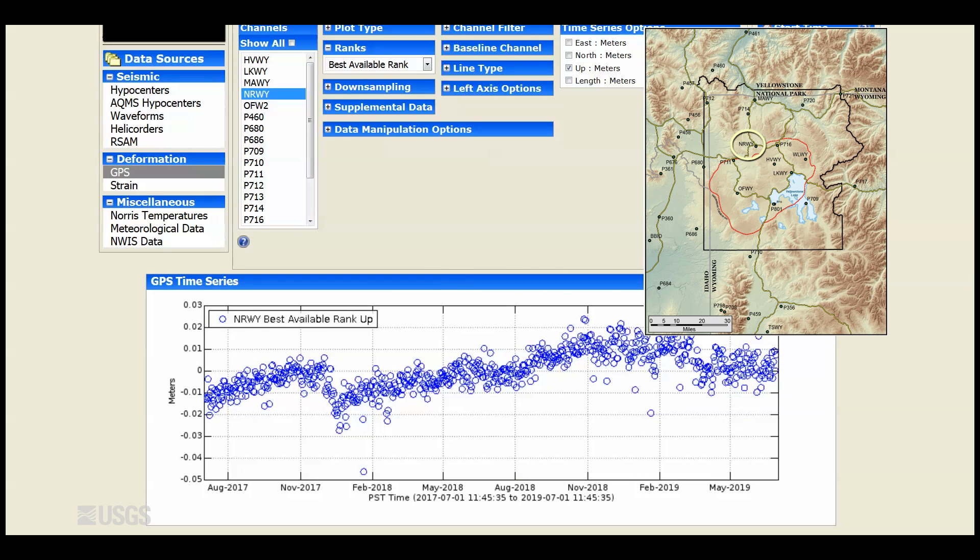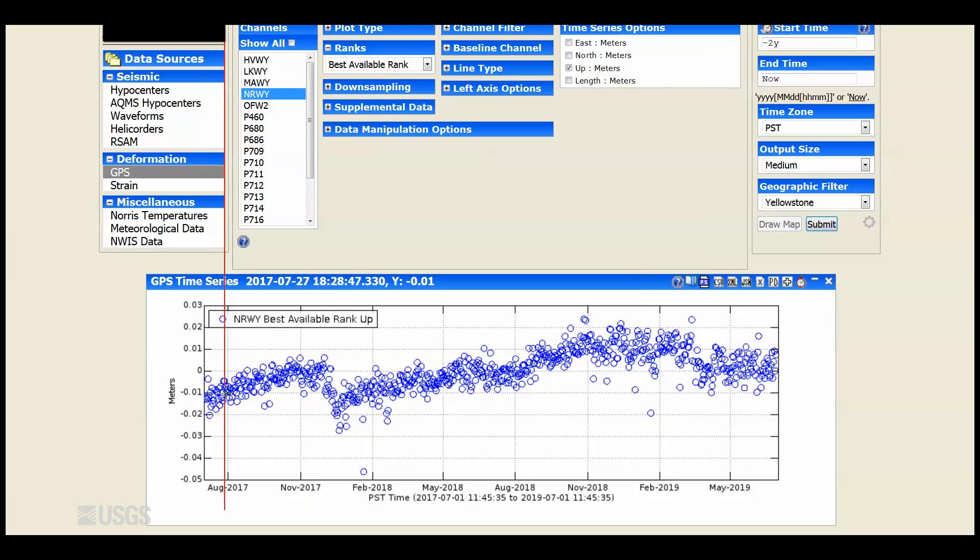At the Norris Geyser Basin, we haven't seen any significant up or down motion since October of 2018. Norris had been uplifting, as you can see in this plot going back the last two years, until about October 2018. At that point, the trend flattened out. We've seen possibly a little down-dropping of maybe a centimeter since October, but it's very difficult to say given how noisy the GPS data are. There really hasn't been much in the way of deformation at Norris in many months.